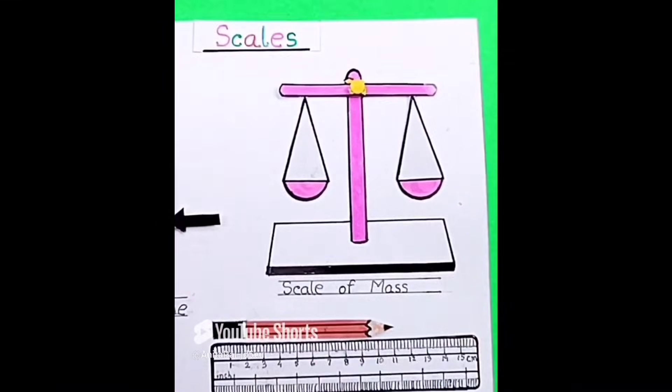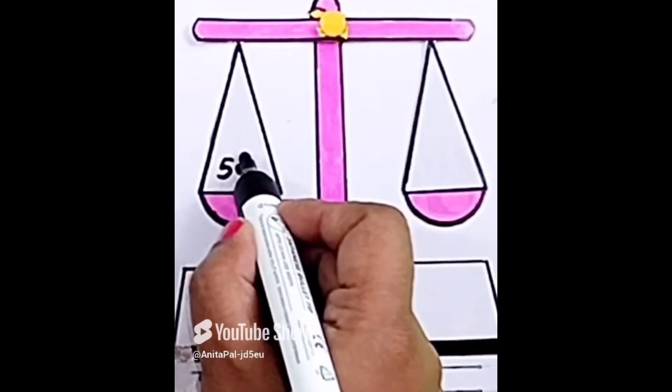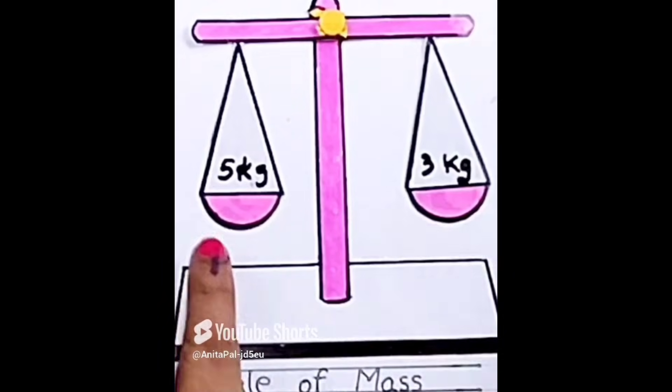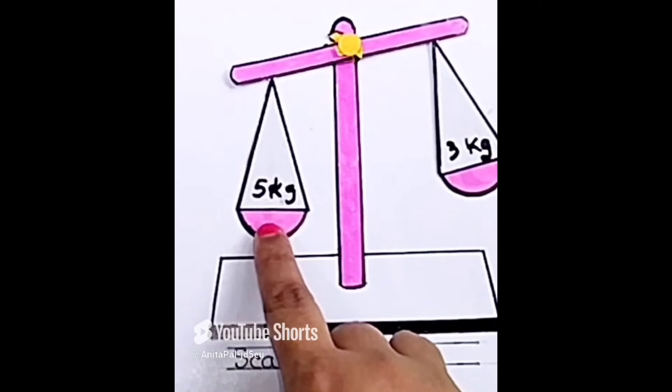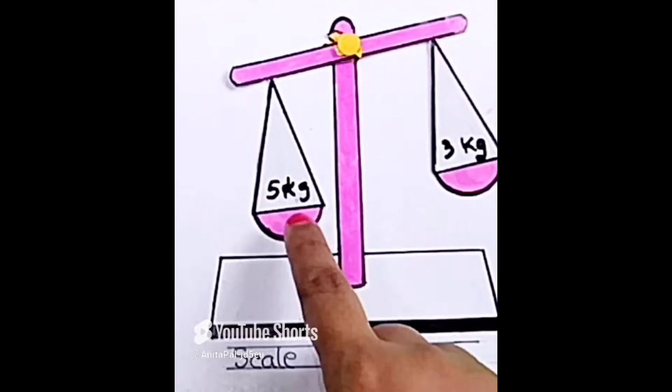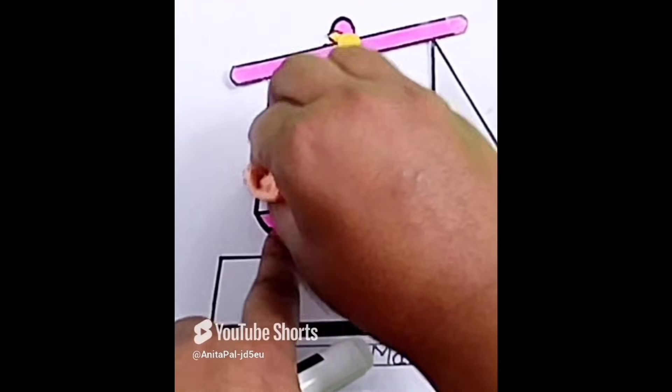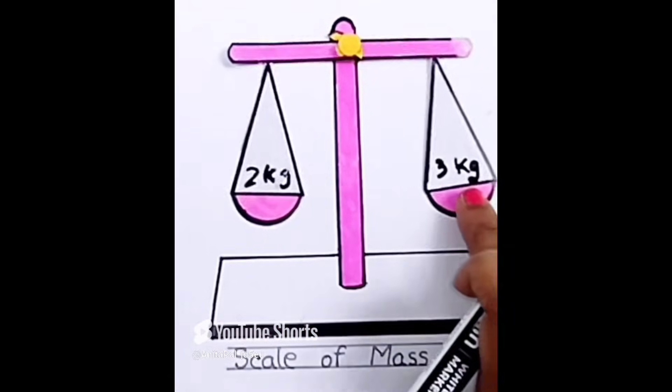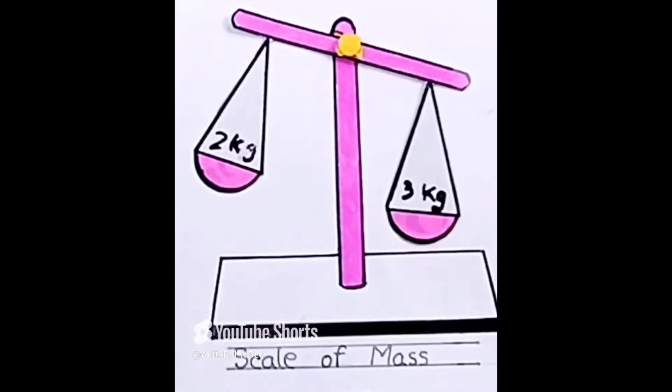Scale for mass. 5 kg, 3 kg. 5 kg is heavier than 3 kg. Now if we make it 2 kg, then 3 kg is heavier than 2 kg.